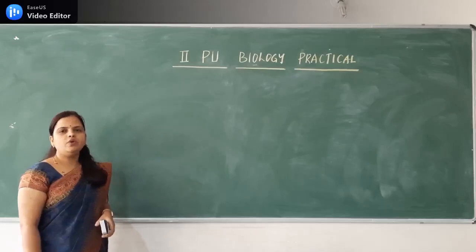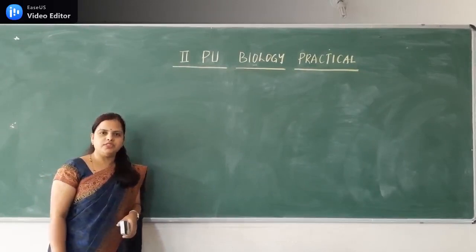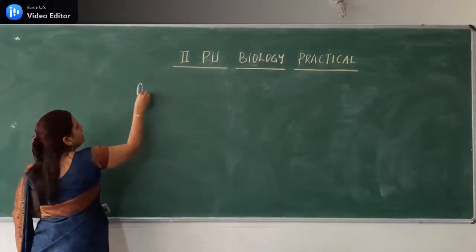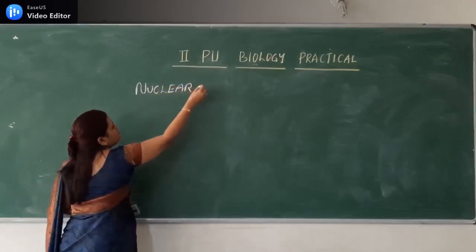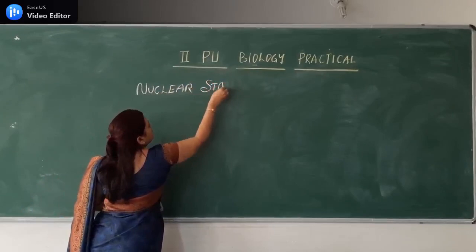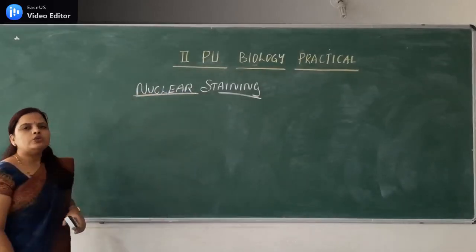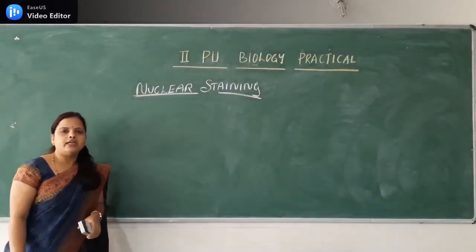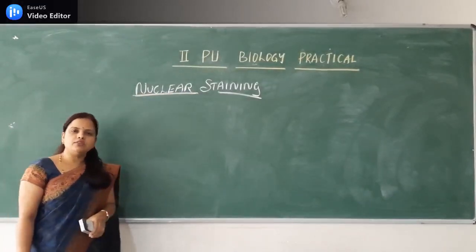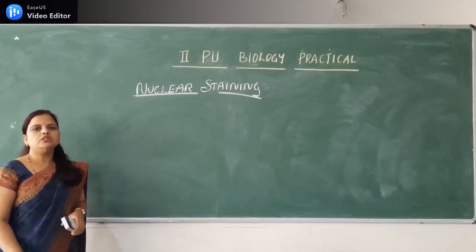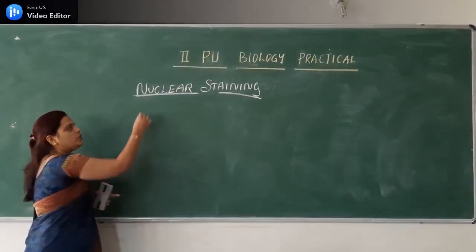Today we will be studying one of the important biology practicals for 2nd PUC. The name of the practical is Nuclear Staining. As you are aware, the biology practical is for 30 marks. In that, the A question covers 4 experiments, and one of them is Nuclear Staining.